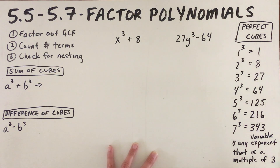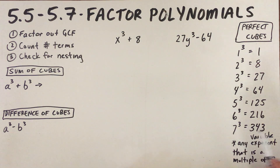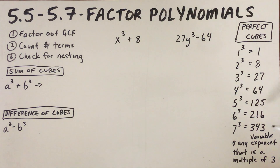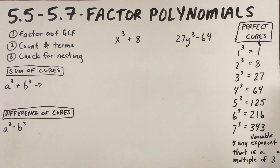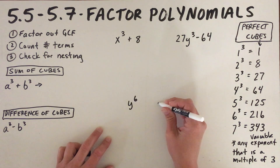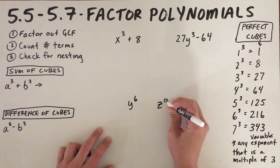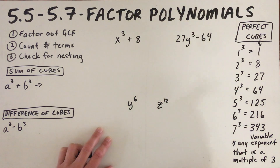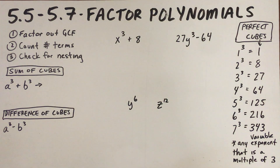The cube root of 343 is 7, and the cube root of 216 is 6. In variables, any variable exponent that is a multiple of three is also a perfect cube. So if I have y to the sixth or z to the twelfth, since these exponents are multiples of three, these are also perfect cubes.